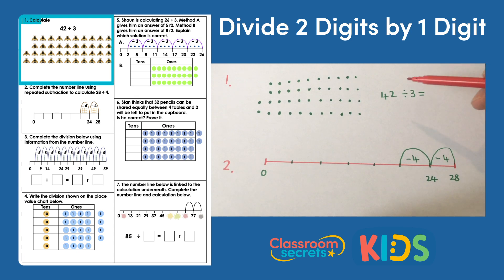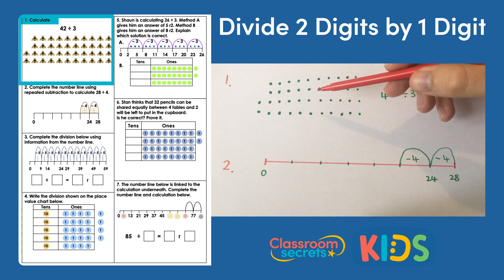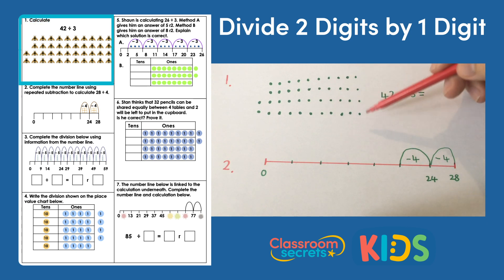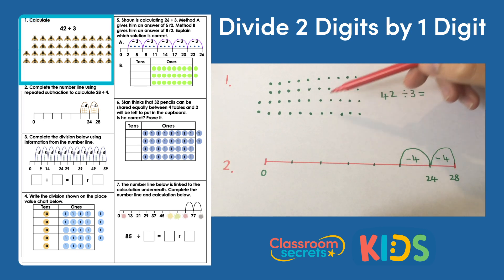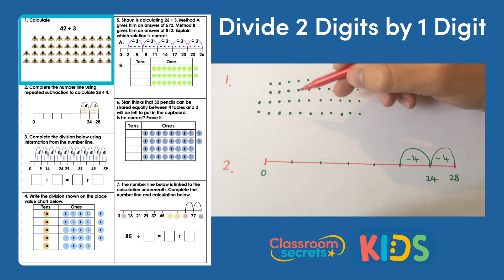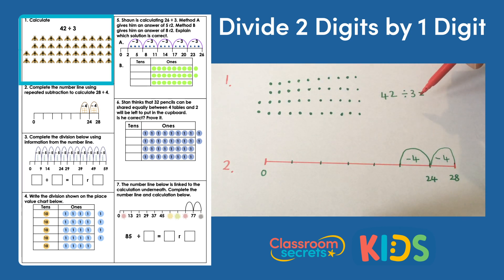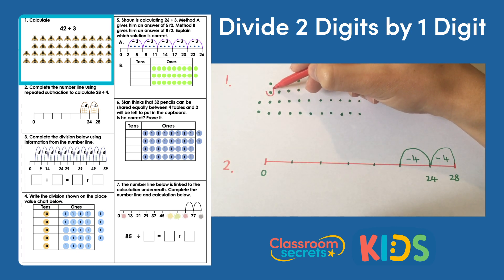Question one wants us to calculate 42 divided by three. It's given some insects to use, which you could share out into three groups, or you could group them into groups of three. Here's my 42 — I've done dots instead of drawing insects — and we're going to put them into groups of three because we're dividing by three, so there's one group of three.